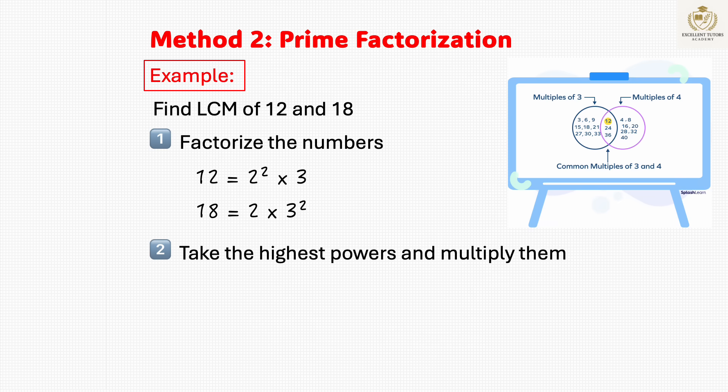Step 2: Take the highest powers of each prime number and multiply them together. Using the highest powers, LCM equals 2 squared times 3 squared equals 36. So the LCM of 12 and 18 is 36.